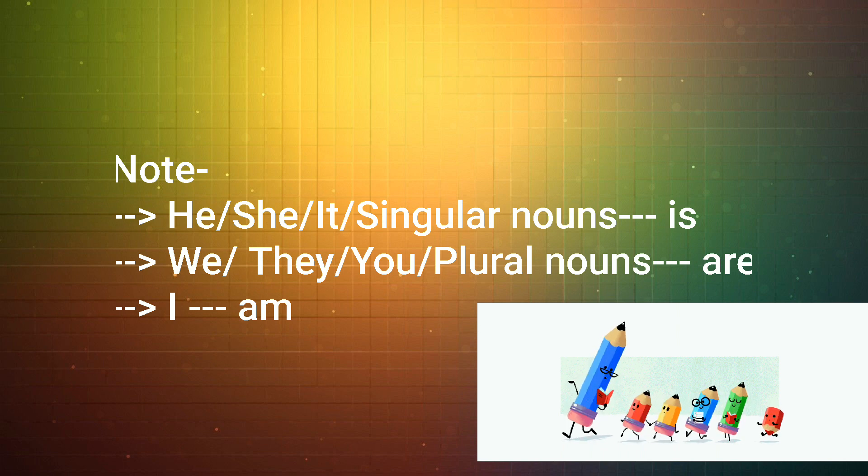And if the subject is I, then we will use am. So it is like: he is, she is, it is, or Aman is; we are, they are, you are, students are. And along with I, we always use am. So, I am working on a project, as an example.